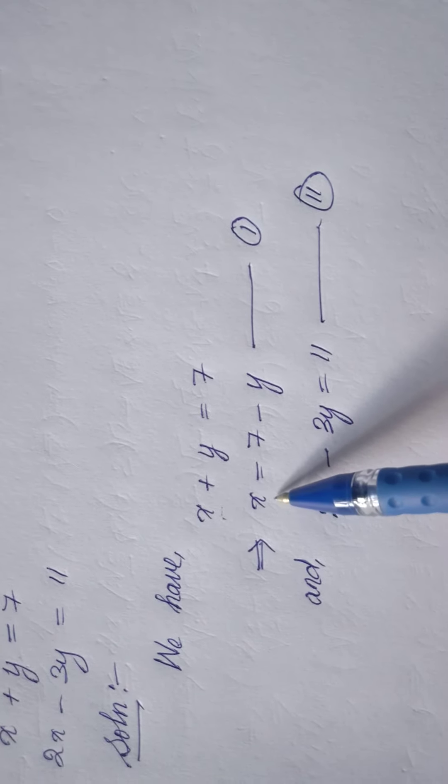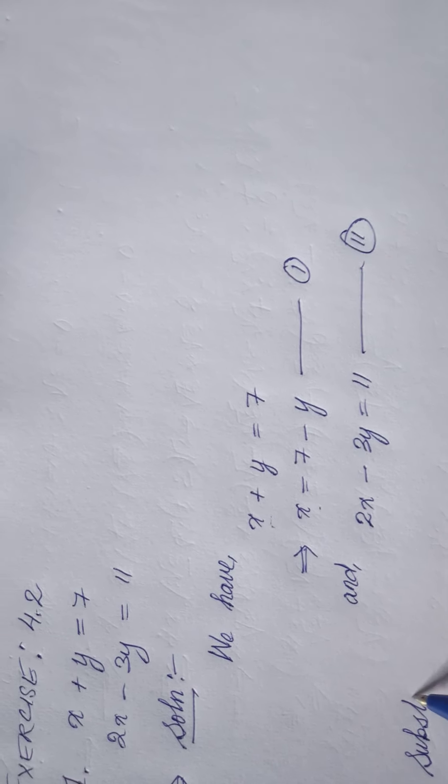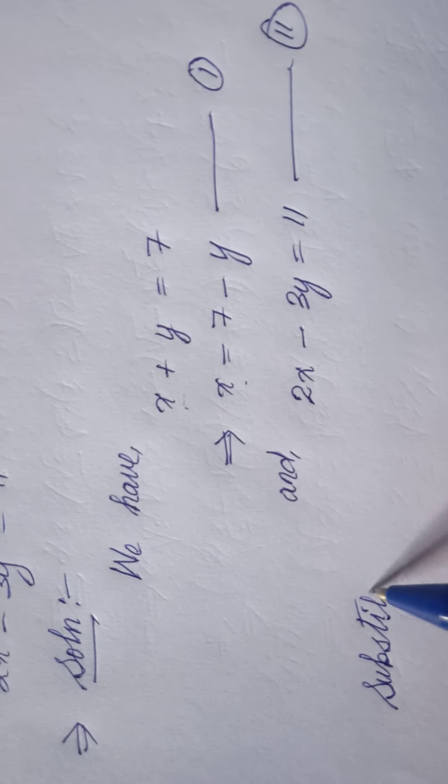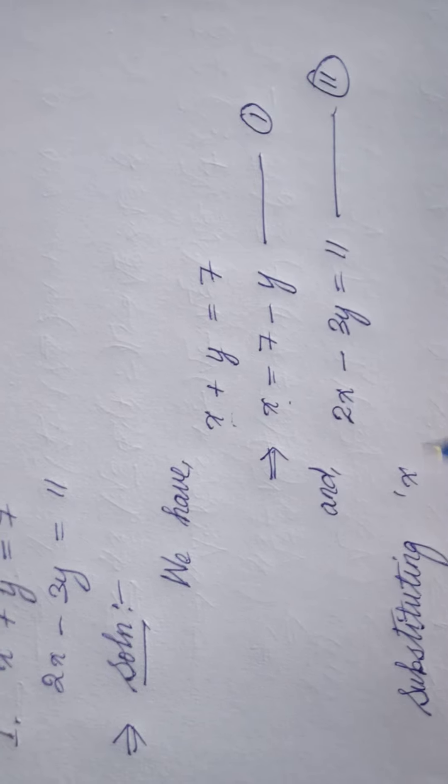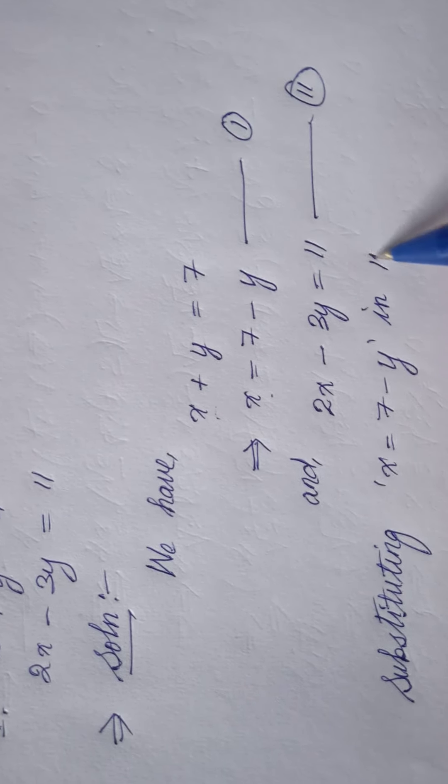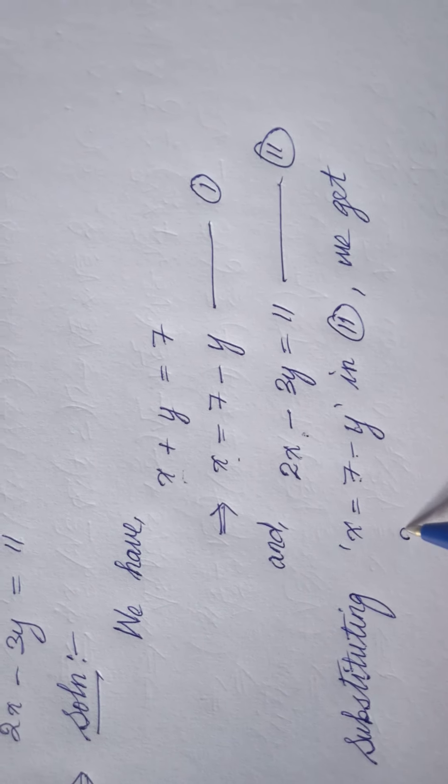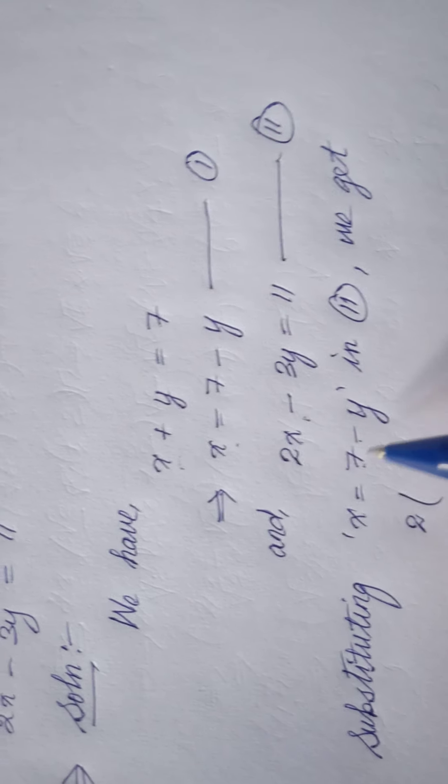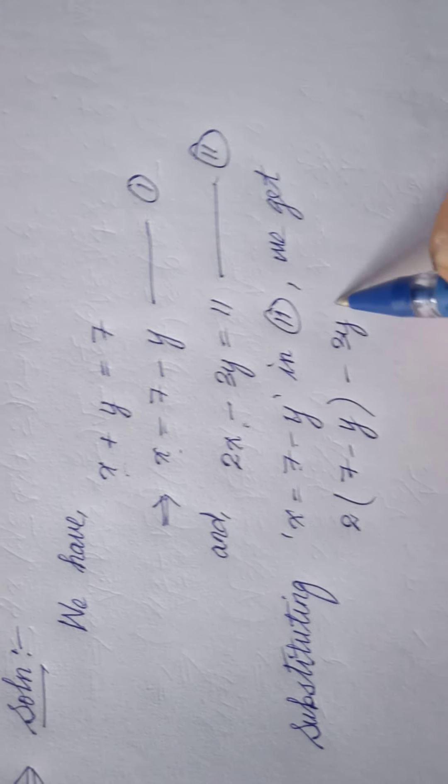Next I have to substitute the value of x in equation 2. Substituting x equals 7 minus y in equation 2 we get, instead of this x I have to put 7 minus y. So 2 times x means 2 times 7 minus y, minus 3y equals 11.